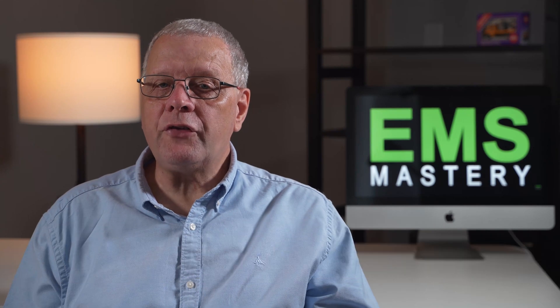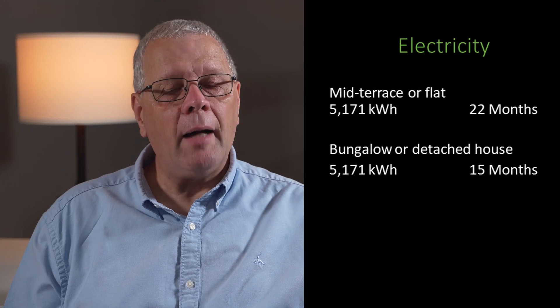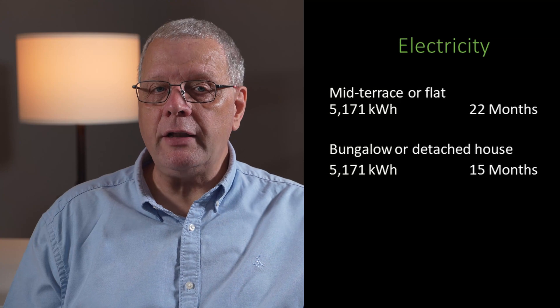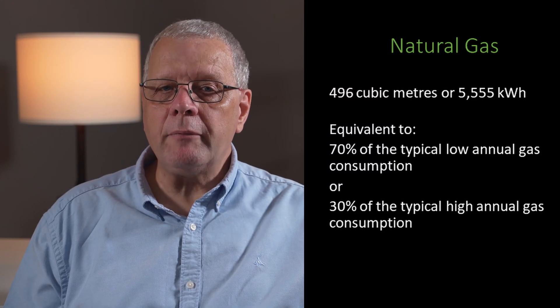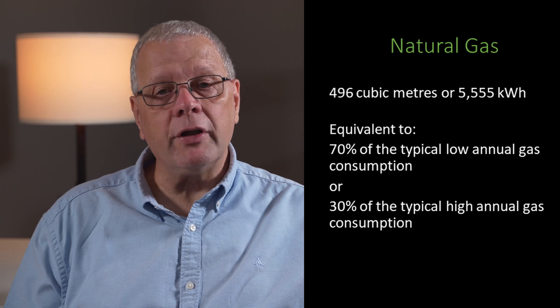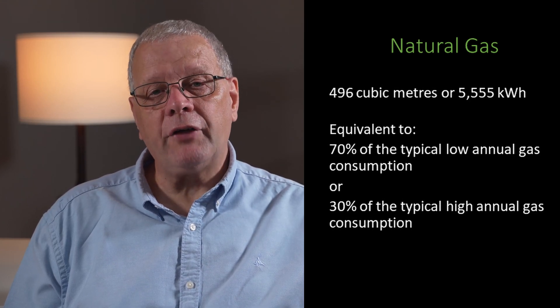Now, let's relate the size of one tonne of CO2 to our homes and our everyday use of electricity and gas. One tonne of CO2 is equivalent to using 5,171 kilowatt-hours of electricity, which could power a medium-sized terrace or flat for about a year and 10 months, or a bungalow or detached house for 15 months based on UK average electricity consumption. For the same one tonne of CO2, you could consume 495 cubic metres or 5,555 kilowatt-hours of natural gas, which is the equivalent of 70% of the typical low consumption of gas or 30% of the typical high consumption of gas in the UK.